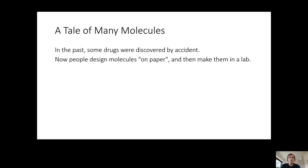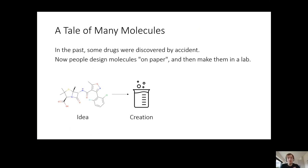They would start by designing some idea on paper — they would draw some molecule and say, okay, we're going to make this specific molecule because we feel it's going to be useful. Then you have this picture on paper and you make it in the lab. You do some chemistry and try to put together these atoms in this specific way to get what is shown in the picture. Once you have it as an actual physical compound, you can try to test it.